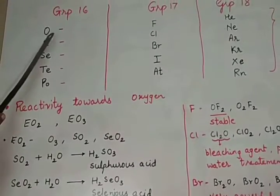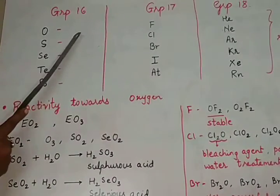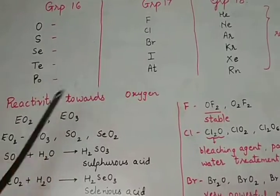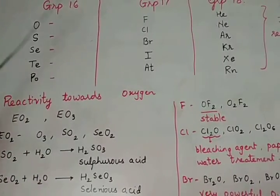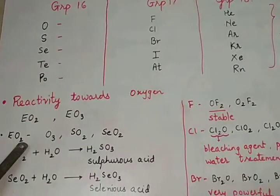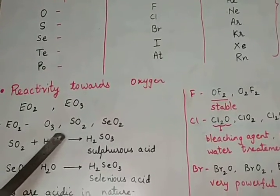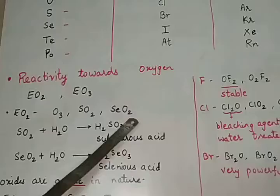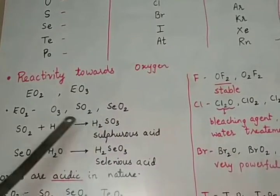Now see, oxygen, this element reacting with O2 will give O3. Ozone is one of the oxides formed by oxygen. So EO2 type of oxide is O3, SO2, and SeO2. These three oxides are of the type EO2.